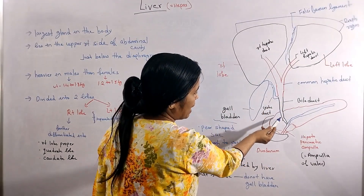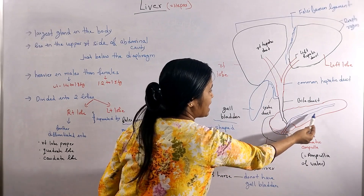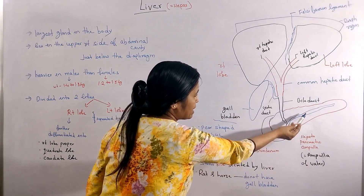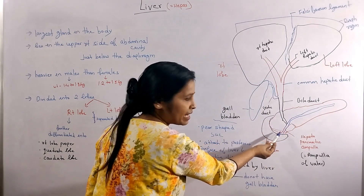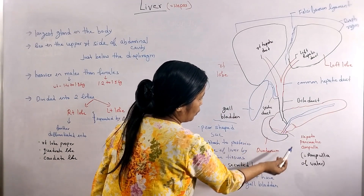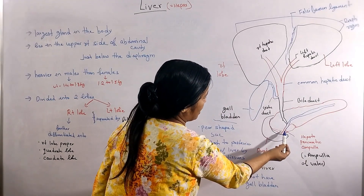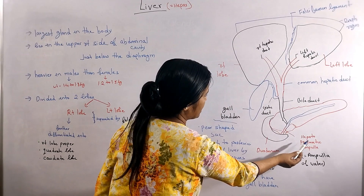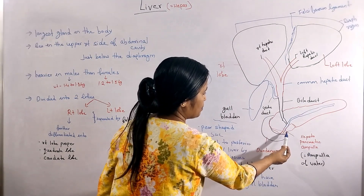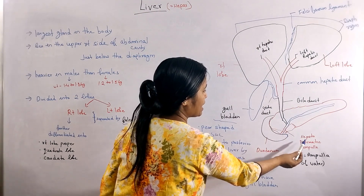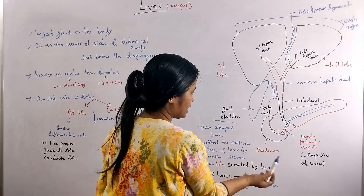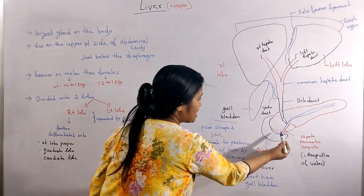The common hepatic duct and the cystic duct together form the bile duct. The bile duct then joins with the main pancreatic duct to form the hepatopancreatic ampulla, which is also called the ampulla of Vater.